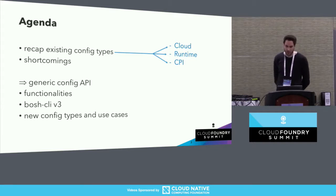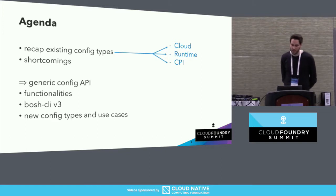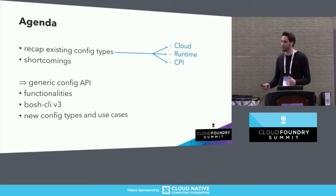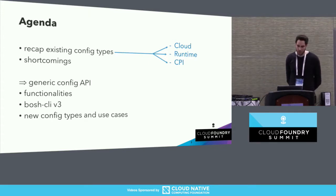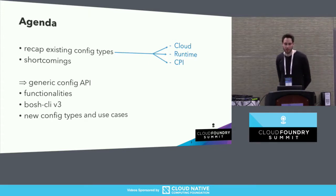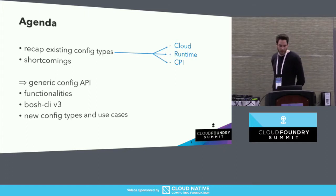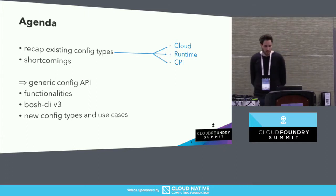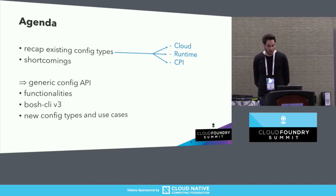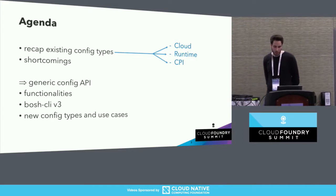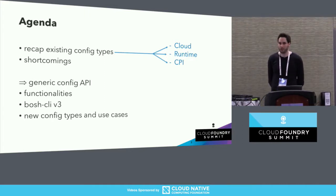We will introduce the generic config API and its new functionalities such as versioning of configuration files, diffing, as well as splitting a config type into multiple named files. We will do a short demo presenting the new BOSH CLI version 3 commands, and then present a couple of new use cases where BOSH — and also you as a BOSH operator — could make use of the generic config API.